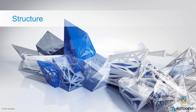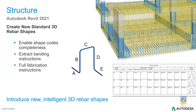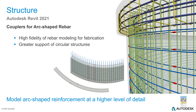Looking at the 2021 Revit enhancements for the structural discipline, new standard 3D rebar shapes have been created. You can enable shape codes, extract bending instructions, and get fabrication instructions. For those working with couplers, there is now higher fidelity rebar modeling for fabrication — couplers are more accurate and representational. Rebar can also now work more easily on circular structures.